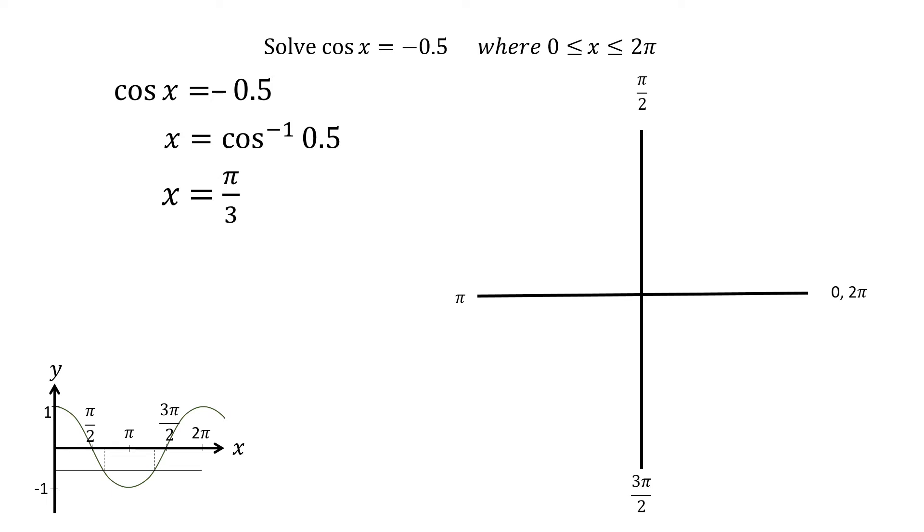Pi over 3 is our reference angle as the original equation was negative. As the cos function is negative in the second and third quadrants, we need to show the pi over 3 from the x-axis in these two quadrants.